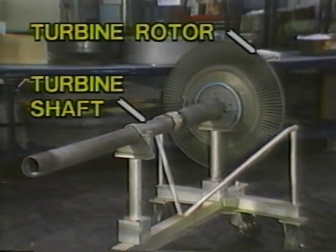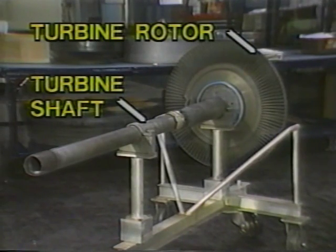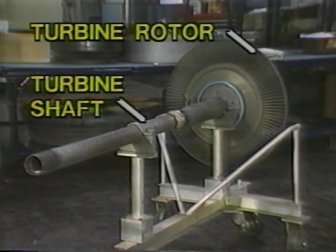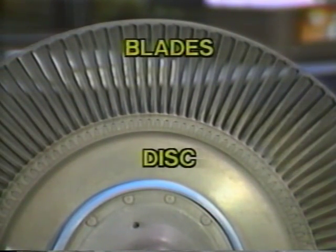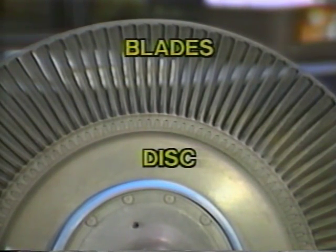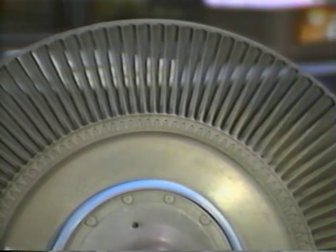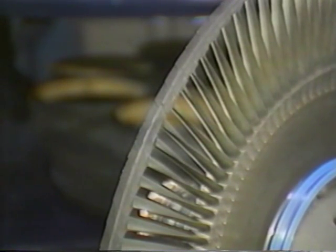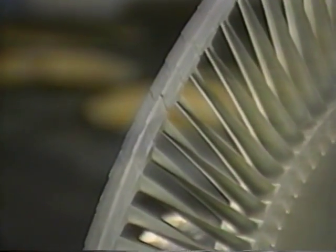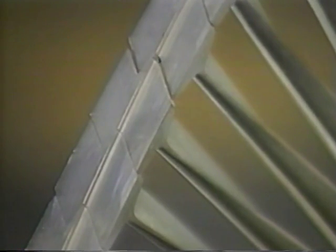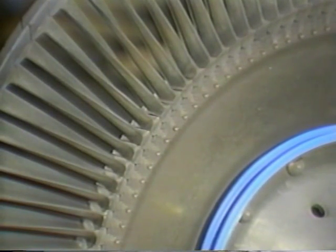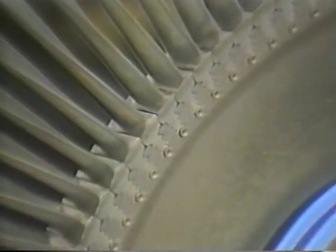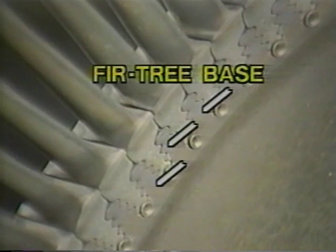Each rotor stage, or turbine wheel, is made up of a disc and blades much like we found in the compressor. The unusual shape of the blades — especially the great curvature — is designed to convert the energy of the gas flow into rotational power. The longer turbine blades frequently have tip shrouds to prevent blade vibration problems and to reduce gas flow leakage around the blade tips. Some turbine blades, because of the tougher and therefore heavier materials required, are retained in the disc using a fir tree base rather than the dovetail shape we spoke of before.